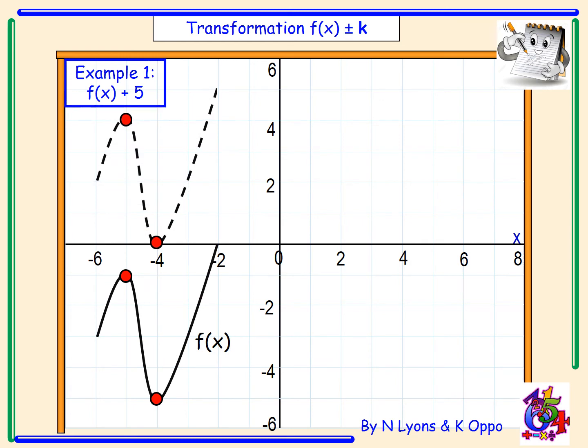Once you have moved your graph up five places we need to clearly label our new points. So the mapping that we do is the coordinate point, we just add the k value to our y-coordinates, or we need to subtract if k was negative.